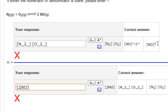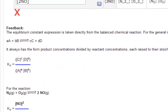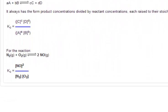So this is the correct answer here: NO squared in the numerator and N2 and O2 in the denominator. Let's go down to the feedback and you can see the correct answer more clearly.